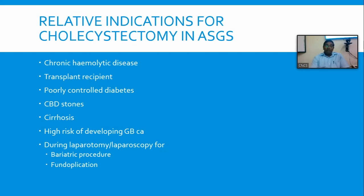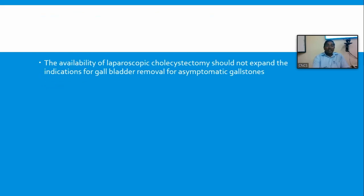To summarize: the absolute indication is symptomatic patients with gallstones. There are a few relative indications for asymptomatic patients. Risk of malignancy is a very remote indication. The availability of laparoscopic cholecystectomy should not expand the indication for gallbladder removal in asymptomatic gallstones — the argument that since the procedure is minimally scarring with good recovery one might as well remove the gallbladder without waiting for symptoms has no valid basis and should not be practiced.